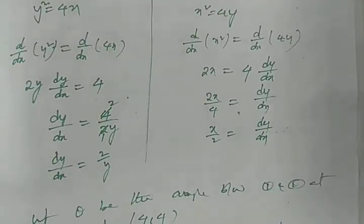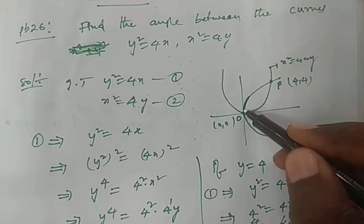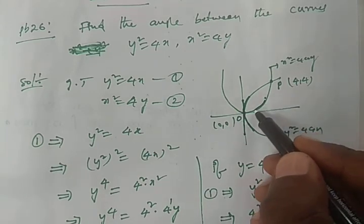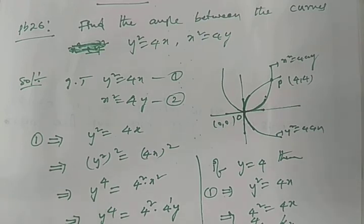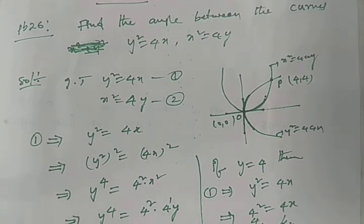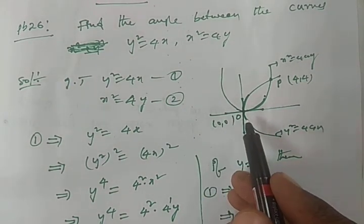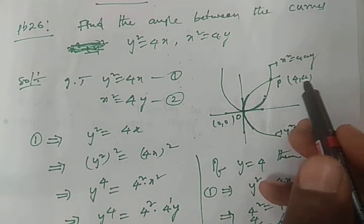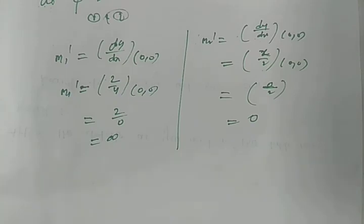So the tangent to the first curve at (0,0) is the y-axis, and the tangent to the second curve at (0,0) is the x-axis. Therefore, the angle between the given two curves at (0,0) is 90°, meaning the curves cut each other perpendicularly at (0,0). At the point (4,4), the angle is tan⁻¹(3/4). Thank you for watching — if you like this video, subscribe to my channel for more videos.